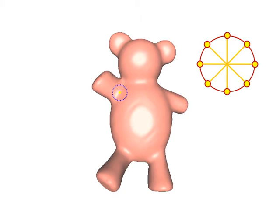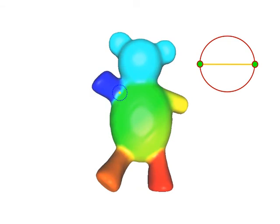First, we uniformly sample four pairs of opposite points on the dot circle. Project each pair of points onto the surface and use them as boundary constraints to define a harmonic field. From each harmonic field, we extract a set of iso lines between the pair of constraints.